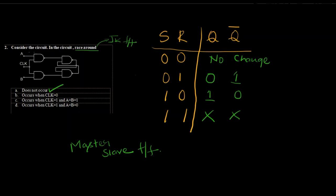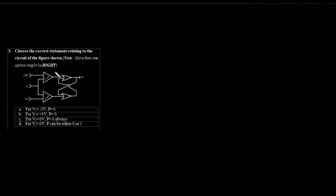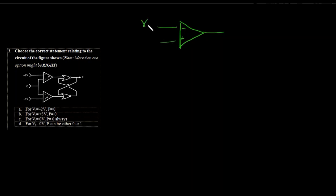This was the answer for question 2. Let's see the next question. This was again a bit higher level question — you should have given some thought on this. Basically we have a comparator and a flip-flop circuit. This is a comparator — a logical comparator. You should be knowing what a comparator does.